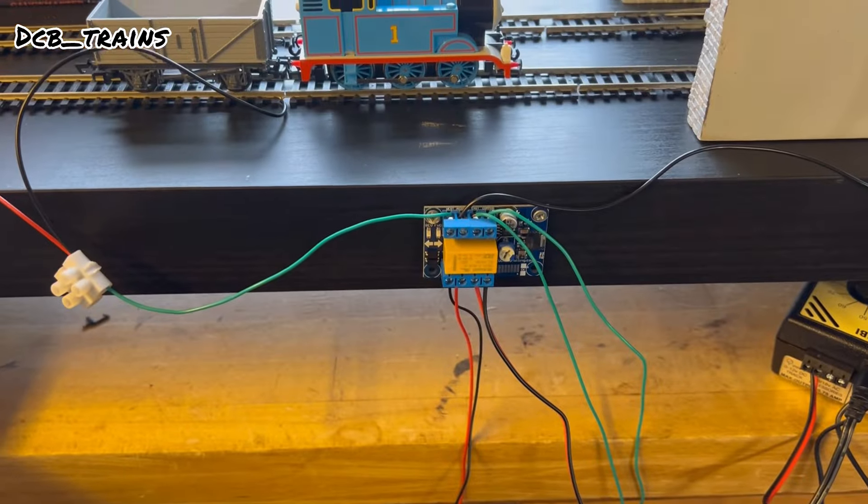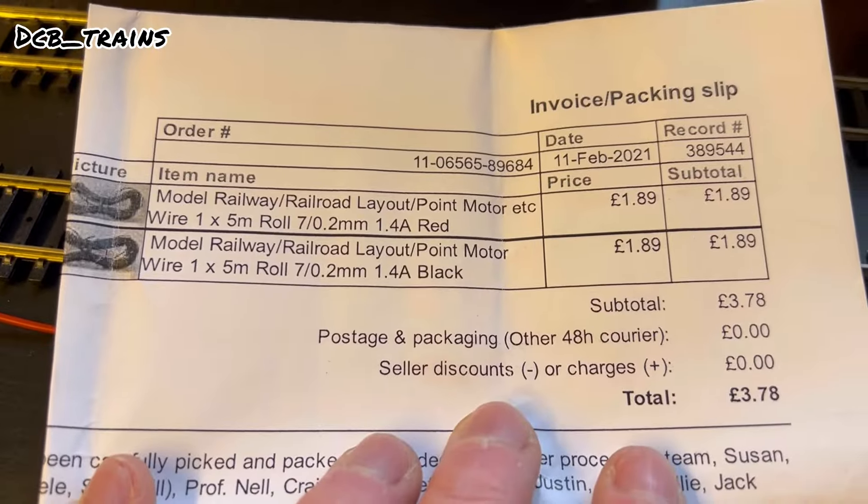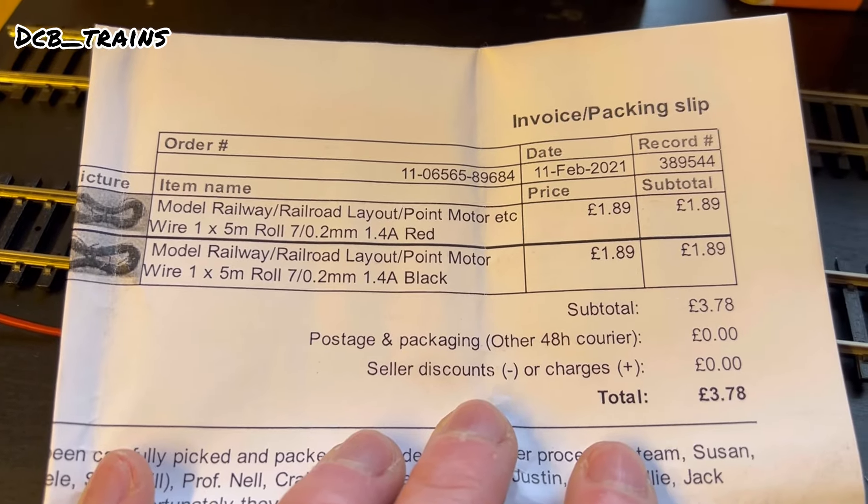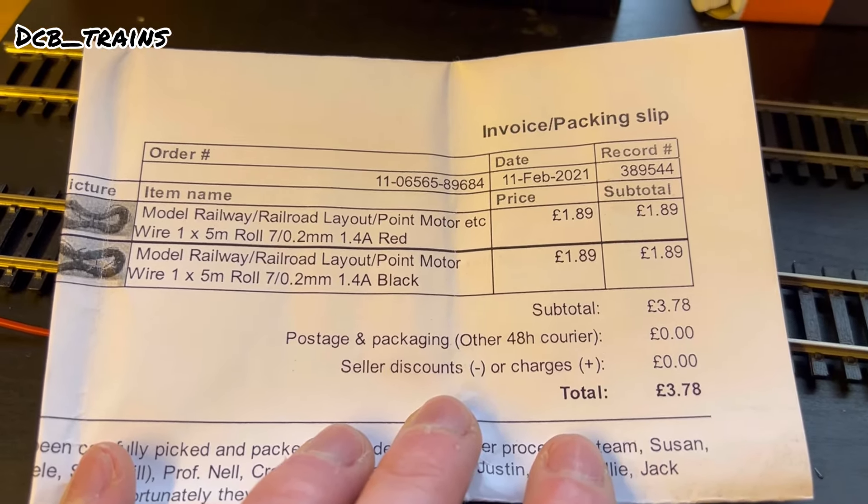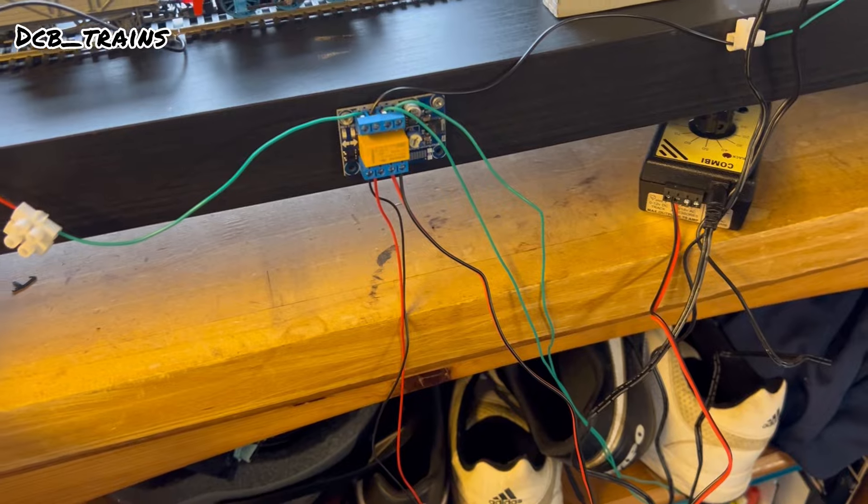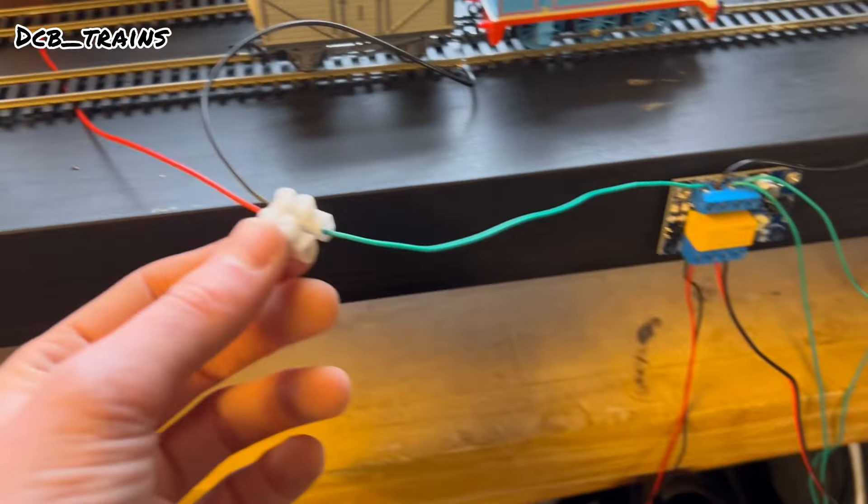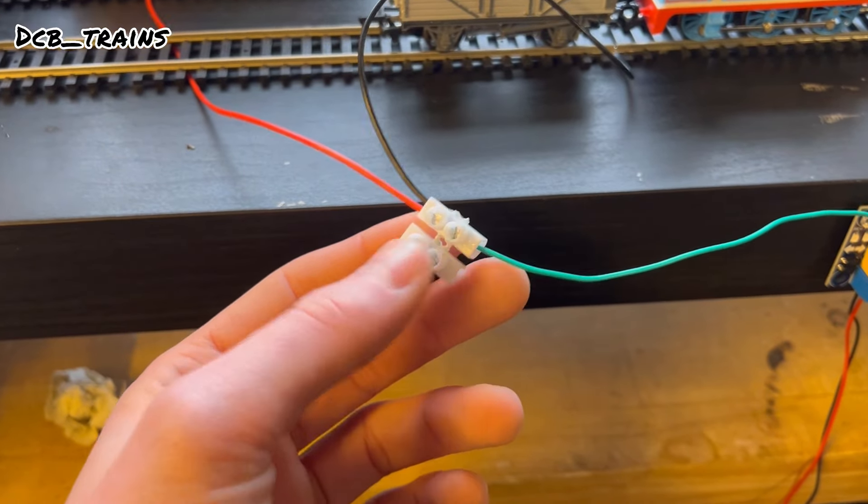So the shuttle unit itself, let's look at that now. I'm going to go through what I've been using. The wiring is just 0.2 mil wire. As you can see from the prices it's cheap as anything, I bought this ages ago. That's the red and black, now green as well, it's all cheap stuff. So 0.2 mil.